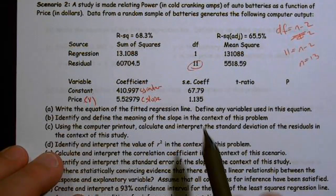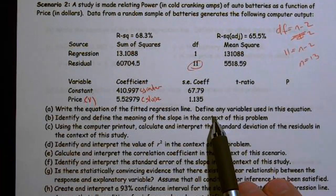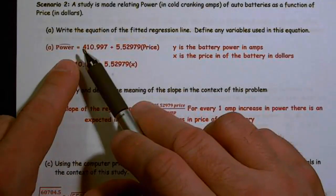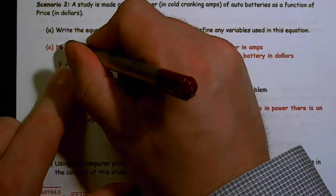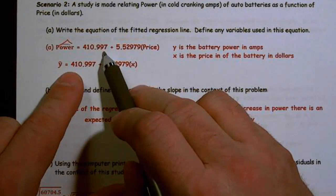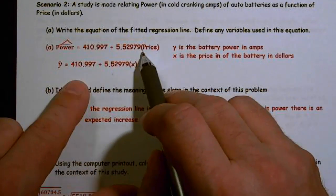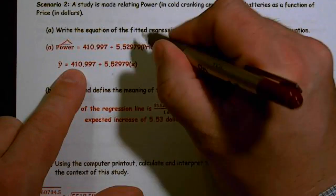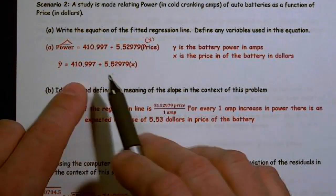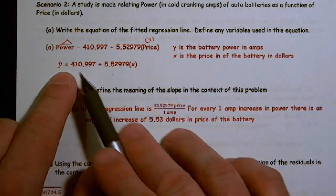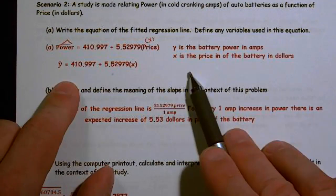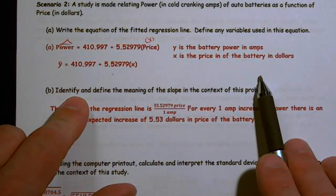All right, so write the equation of the fitted regression line to define any variables. Well, the easy way to do it is say power, make sure it has a hat on it, equals 410.997 plus 5.52979 price. If I do that, then I've defined my variables. Otherwise, y hat equals this, make sure that has a hat. Y is the battery power in amps. X is the price of the battery in dollars.